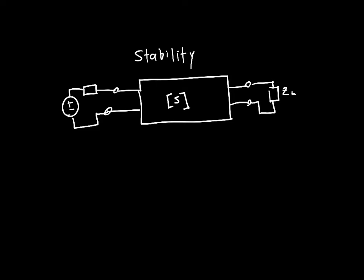We know that this amplifier is characterized by a certain gamma_n, the effective reflection coefficient, after all the reflections back and forth on the output side are taken care of, and those are all transmitted back to the input.